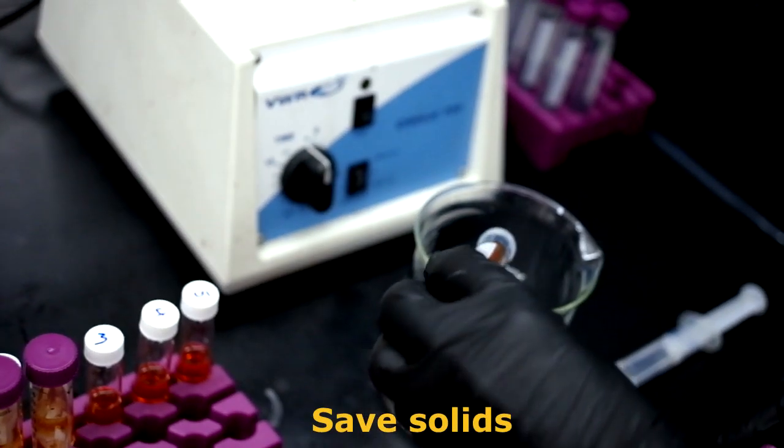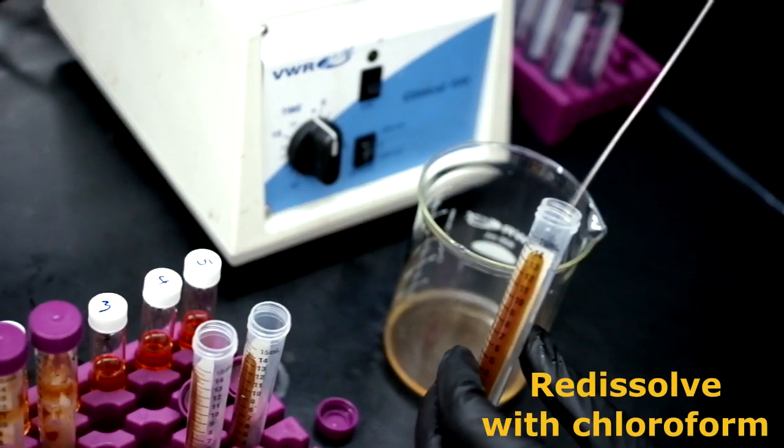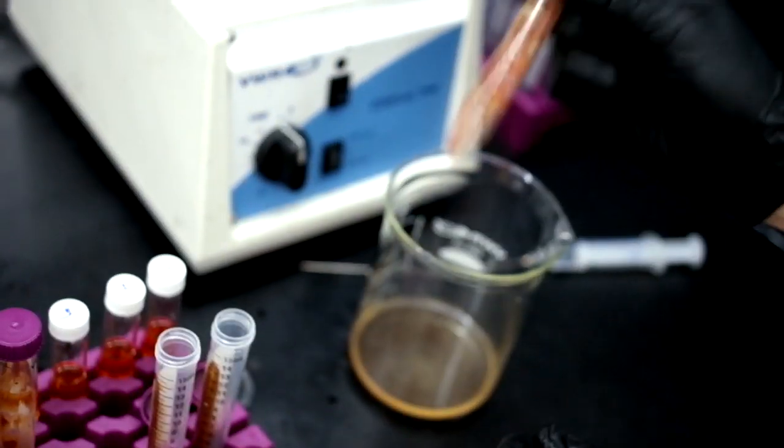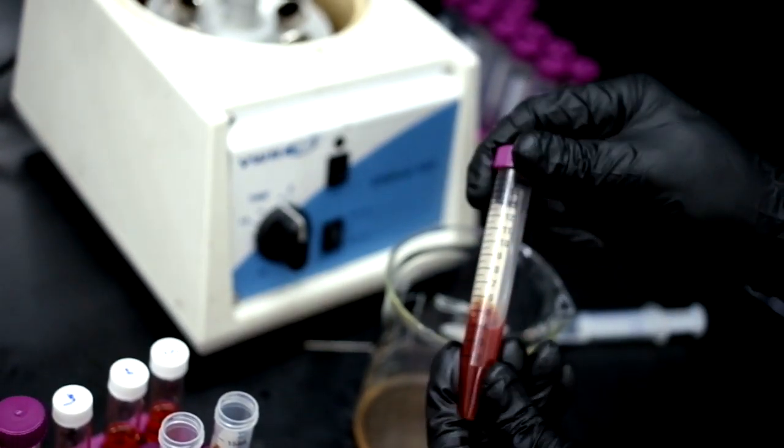Pour off the liquid and save the solids. Add fresh chloroform into each test tube to re-dissolve the crystals. Shake to ensure that all the precipitate has properly dissolved.